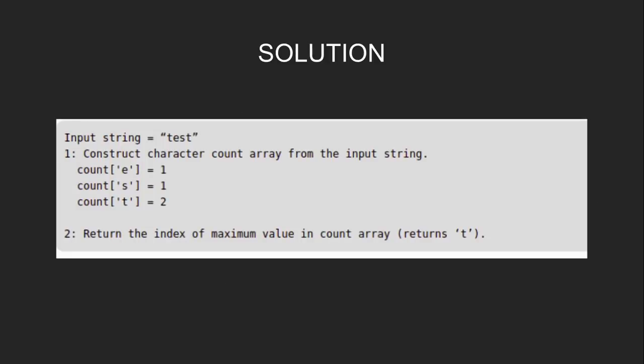For the input string 'test', we construct a count array from the input string. The count of 'e' will be equal to 1, the count of 's' is also equal to 1, and the count of 't' is equal to 2. Then we return the index of the maximum value in the count array, which will return 't'.